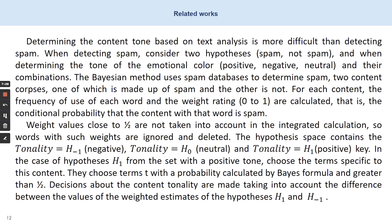Determining the content tone based on text analysis is more difficult than detecting spam, because when detecting spam you consider two hypotheses: it is spam or it is not spam. When determining the tone — the emotional color — you consider positive, negative, neutral, and their combination. The Bayesian method uses spam databases to determine spam, with two content cores: one made up of spam and the other not. For each content, the frequency of use of each word and the weight weighting are calculated — that is, the conditional probability that the content with that word is spam. Weight values close to one half are not taken into account, so in the integrated calculation, words with such weights are ignored and deleted.